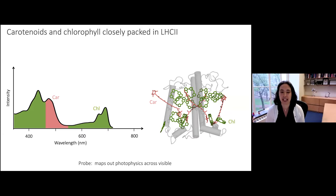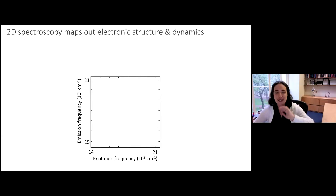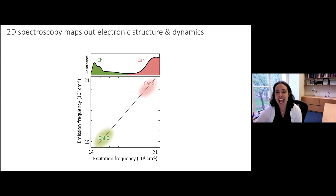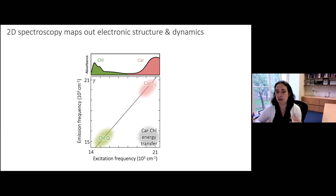Of course, that means we need a probe that maps out the photophysics across the visible, and that probe — as should come as no surprise given the title of the seminar — is 2D electronic spectroscopy. What we really need is a 2D spectrum that encompasses both the carotenoid and the chlorophyll transitions, so we can understand the dynamics of both states and how the carotenoids transfer energy to the chlorophyll.